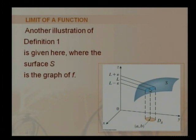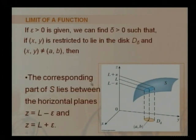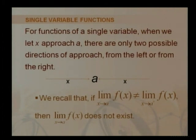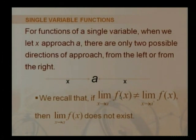Function f(x,y) has a limit L. For a function of a single variable, when x approaches a, there are only two possibilities: we can approach from the left side or from the right side. On the real line, x approaches a from the left, and x approaches a from the right. The limit of f(x) when x approaches a from the left is called x tends to a minus.